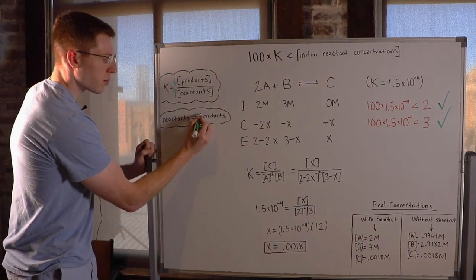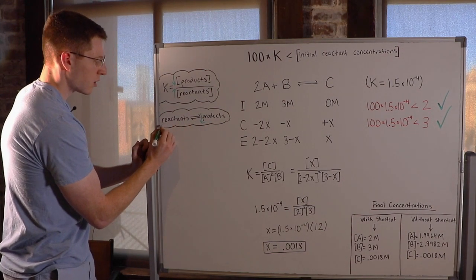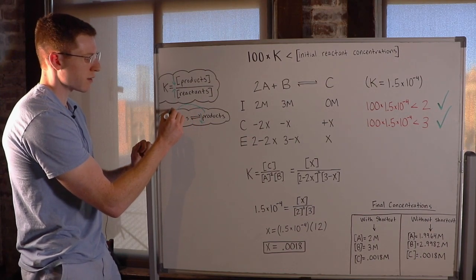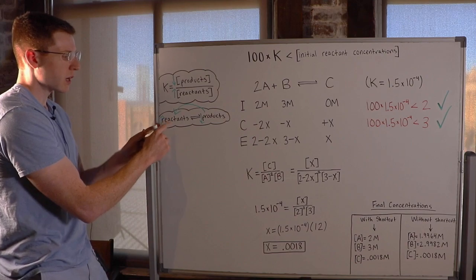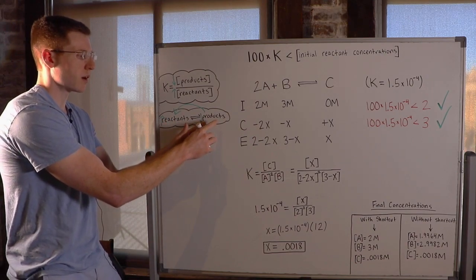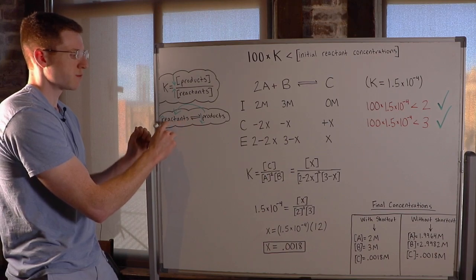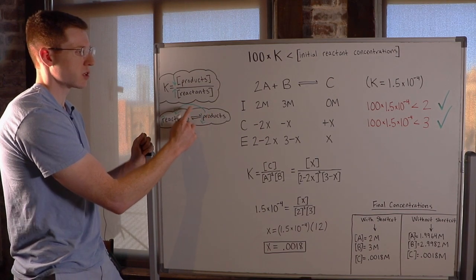So if we have very little products and a lot of reactants, that means our reaction is reactant favored, right? Almost none of our reactants are going to be turning into products. We're all going to be concentrated over here at the reactants, and just a few reactants are going to trickle over and turn into products.